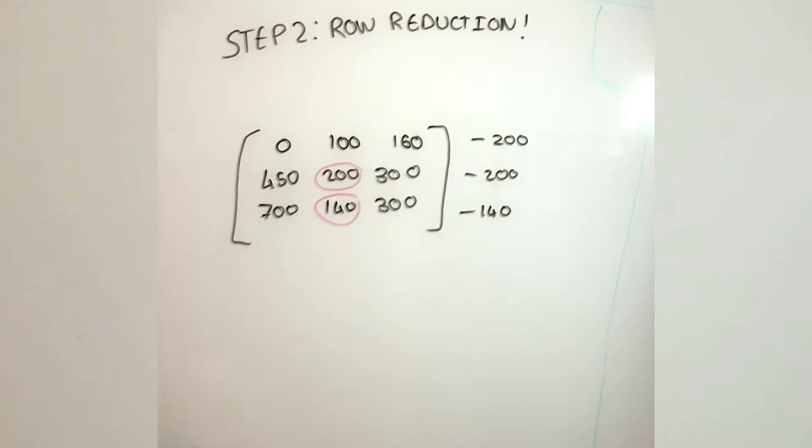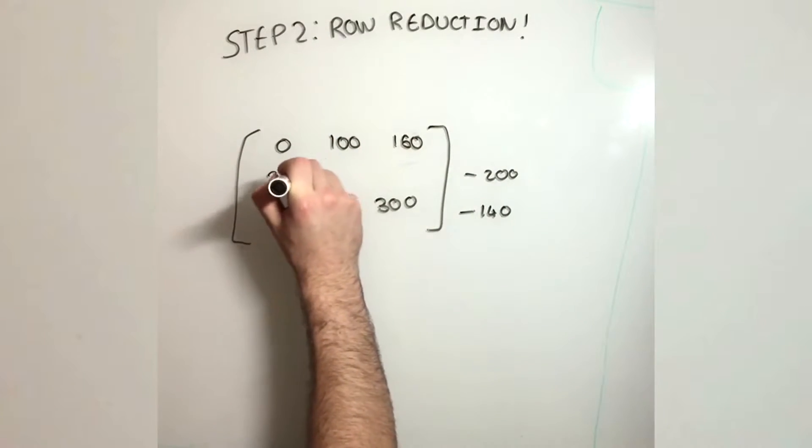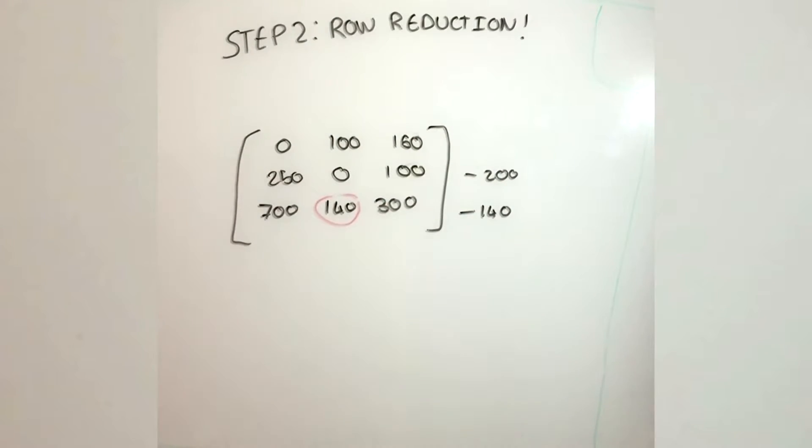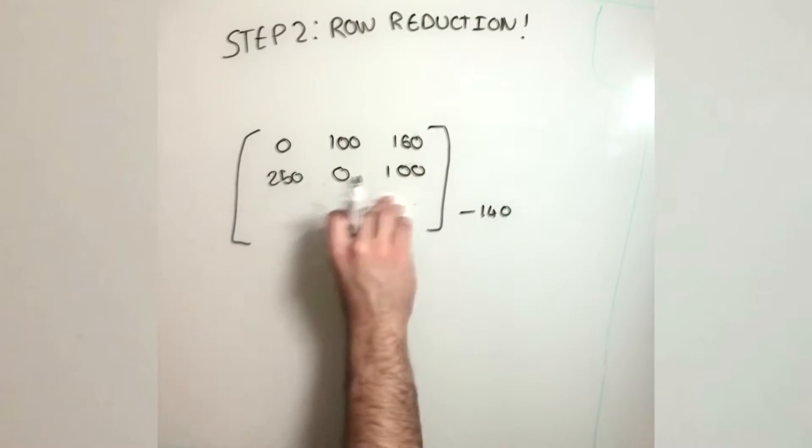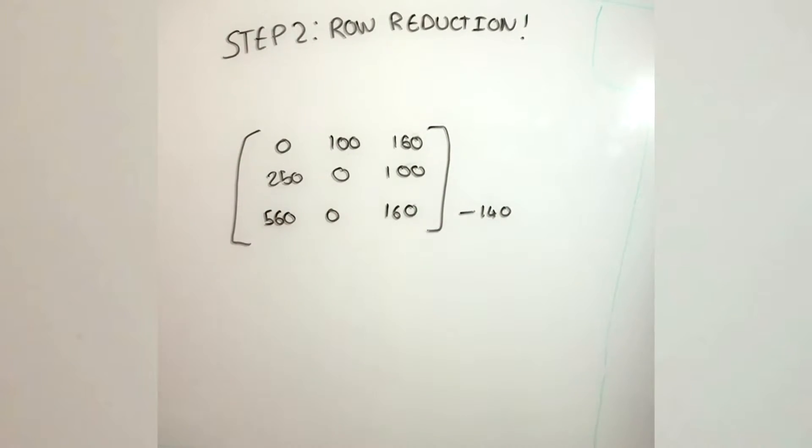So in our case, we subtract the first row by 200, and then we subtract the second row by 200. And then finally, in the final row, we subtract it by 140.